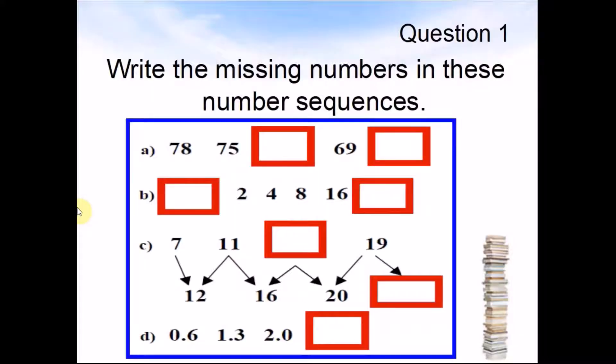Question 1. Write the missing numbers in these number sequences. A: 78, 75, something, 69, something.